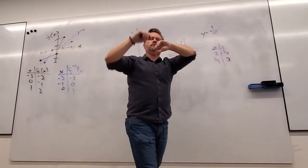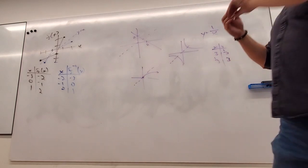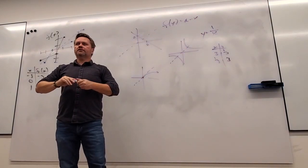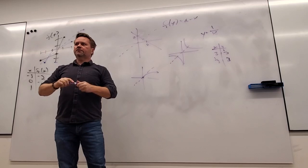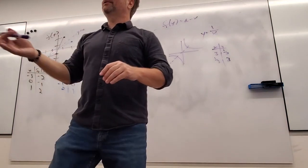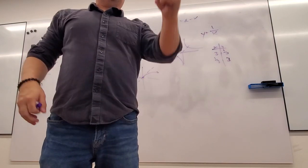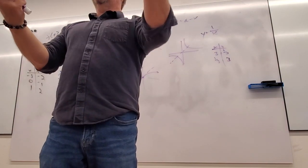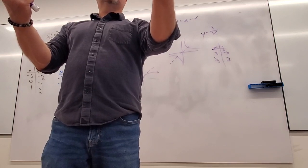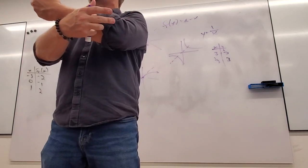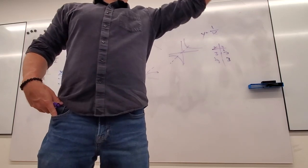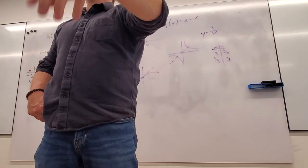Functions of the form a minus x will be their own inverse. For example, two minus x: what's two minus seven? Negative five. Input of seven gives output negative five. What's two minus negative five? Seven. So it takes it right back to where it started — it undoes itself. An inverse function takes the function's output and brings it back to the input.